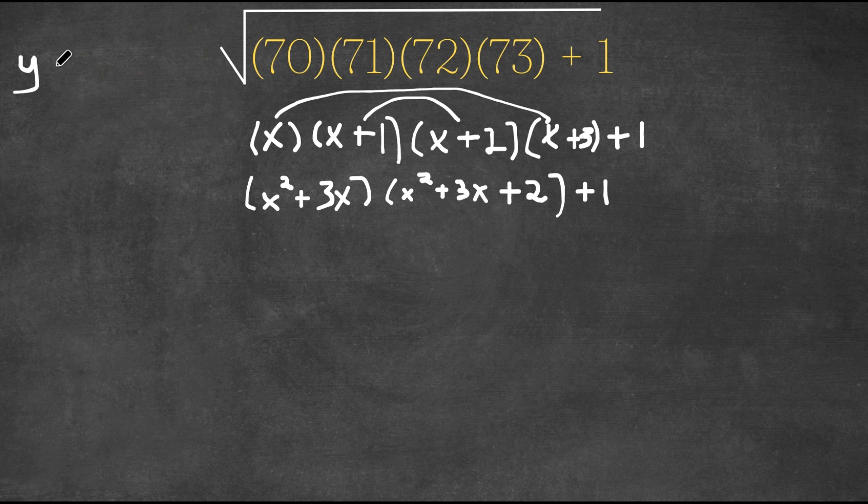Now I'm going to let y equal x squared plus 3x. So if that's true, then this would be y plus 2, because we already have our y here, x squared plus 3x, and we're simply adding 2. So we could plug in y in both of these, and this would be y times y plus 2.